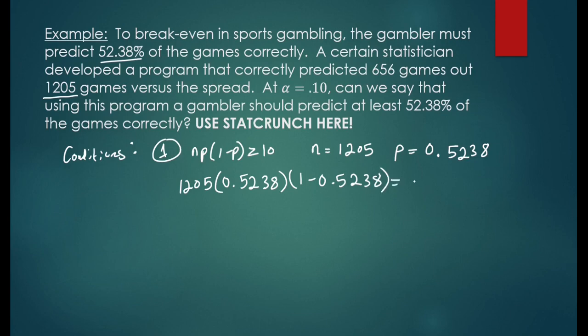Let's plug in the numbers into the formula. 1205 times 0.5238 times the quantity 1 minus 0.5238 yields a value of 300.6. And that's clearly greater than or equal to 10. So condition one is met.